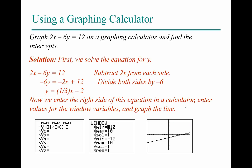To graph 2x − 6y = 12 on a graphing calculator or Excel, solve for y in slope-intercept form. Subtract 2x from both sides: −6y = −2x + 12. Divide each term by −6: y = (1/3)x − 2. The slope is 1/3 and the y-intercept is −2. You can then plot this using a graphing calculator or set up a table of points on an Excel spreadsheet.